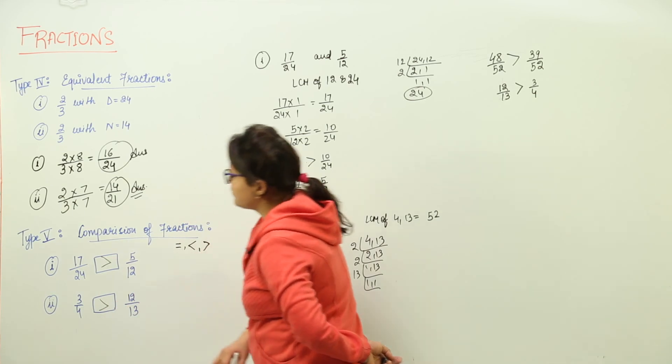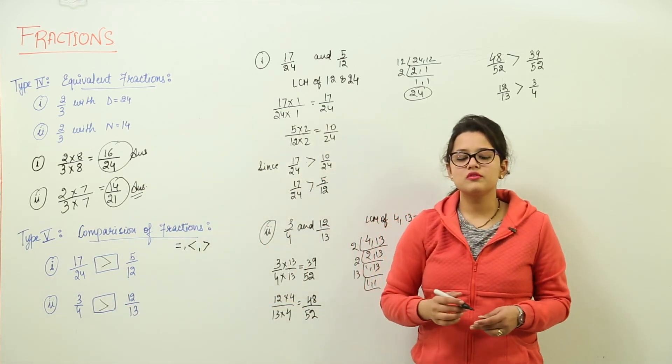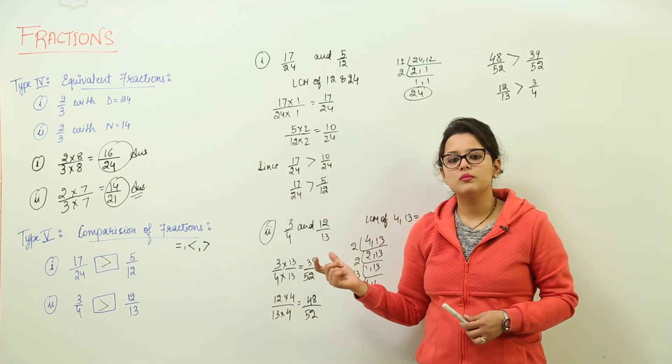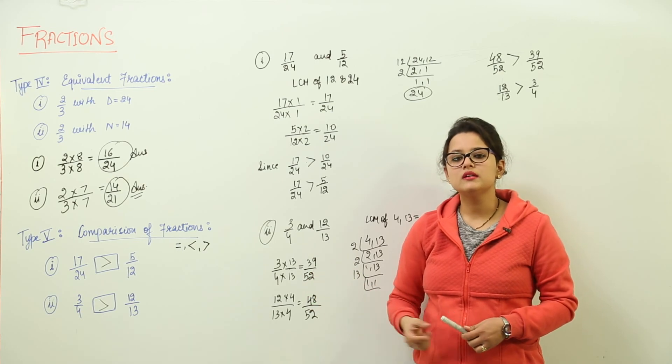So you can compare n number of fractions by making their denominators the same and comparing their numerators.